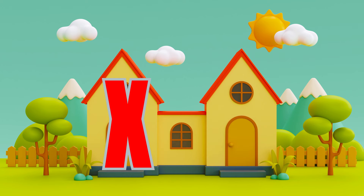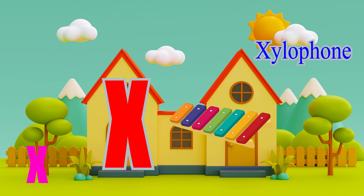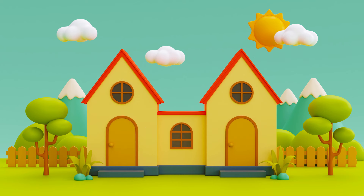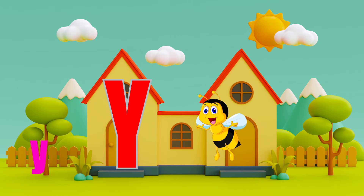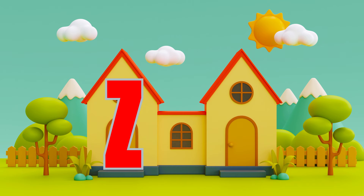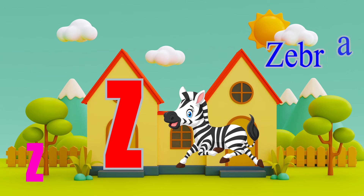X is for xylophone. X, x, xylophone. Y is for yellow. Y, y, yellow. Z is for zebra. Z, z, zebra.